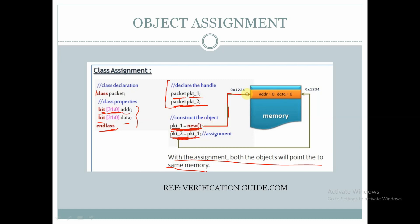For the handle pkt1, memory is created containing address and data. Here we are assigning pkt1 to pkt2, so pkt2 will also be pointing to the same memory. By object assignment, two handles will point towards the same memory.